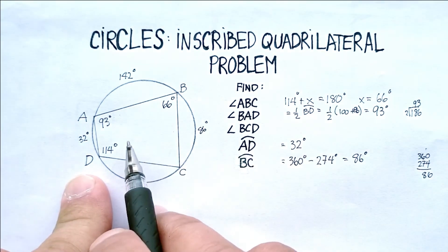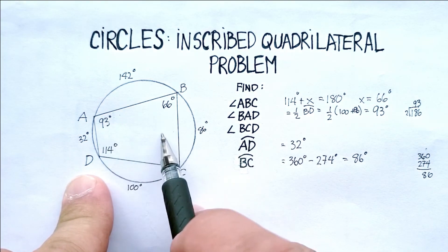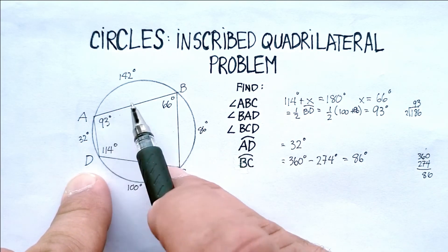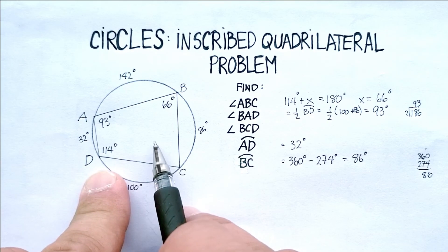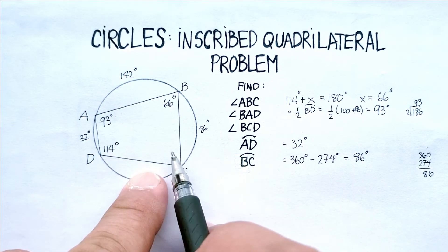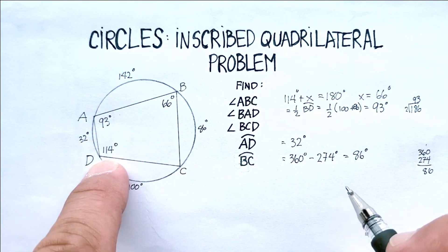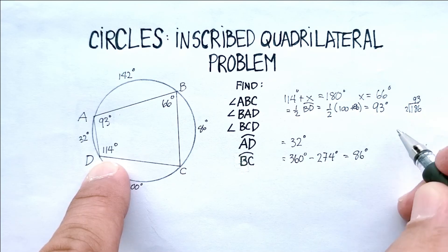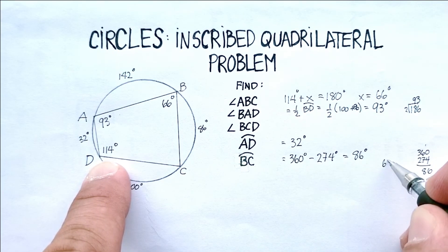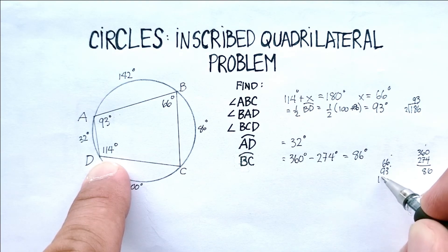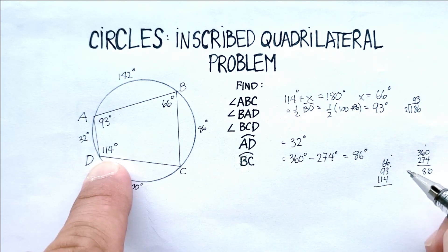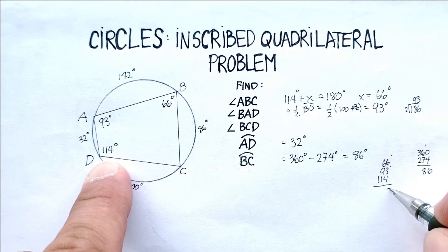And we also know now that inside a quadrilateral, all four angles add up to 360 degrees. We have three of the four. Let's add up 66, 93, and 114. So 66, 93, 114 gives us 10, 13, carry the 1, 17, carry the 1, 273.